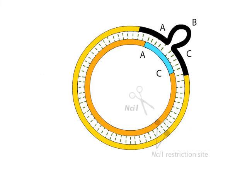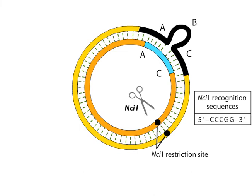The restriction endonuclease NCI1 is incubated with the heteroduplex DNA. NCI1 recognizes the DNA sequences CCCGG or CCGGG and cleaves after the second cytosine nucleotide.